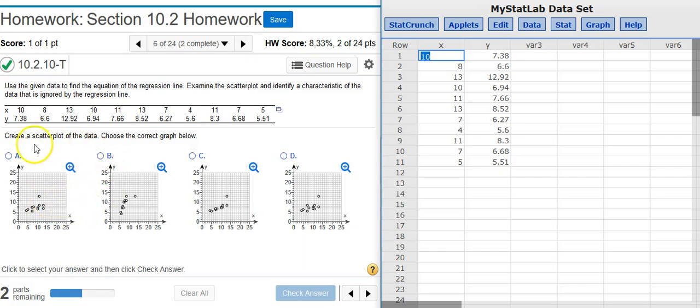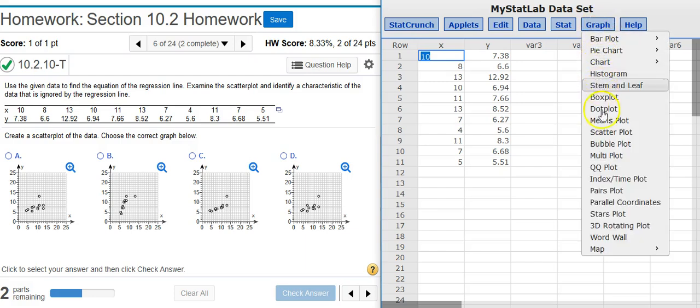Now, the first part of our problem asks us to create a scatterplot. Inside StatCrunch, I could go up here to Graph and then select Scatterplot. However, I know that I'm going to have to make a regression line equation eventually anyway, and I get a scatterplot from the regression analysis.